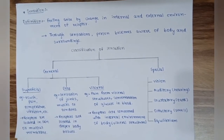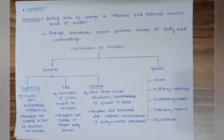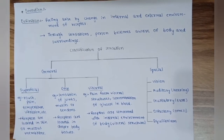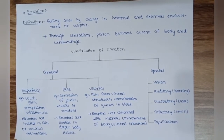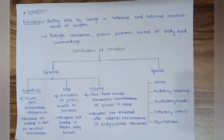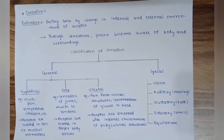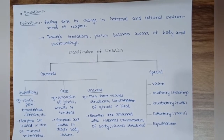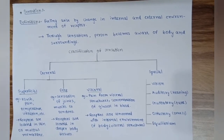General sensation is further divided into three types: superficial, deep, and visceral. Superficial sensation examples are touch, pain, temperature, and vibration. Receptors are located in the skin or mucous membrane. Deep sensation examples are sensations of joints, muscles, or tendons, with receptors in deeper body tissues. Visceral sensation examples include pain from visceral structures and concentration of glucose in blood; receptors are concerned with the internal environment of the body.